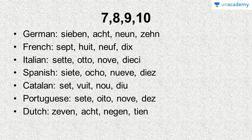In Italian: sette, otto, nove and dieci — as I mentioned earlier, C-I together is 'chi', so dieci. In Spanish it becomes siete, ocho — note it's ocho not otto here — nueve and diez. All these Romance languages resemble quite a bit because they all are Romance languages, except German and Dutch which are Germanic. In Catalan: set, vuit — with a V, more towards the French — nou and deu. In Portuguese it's sete, oito, nove and dez.